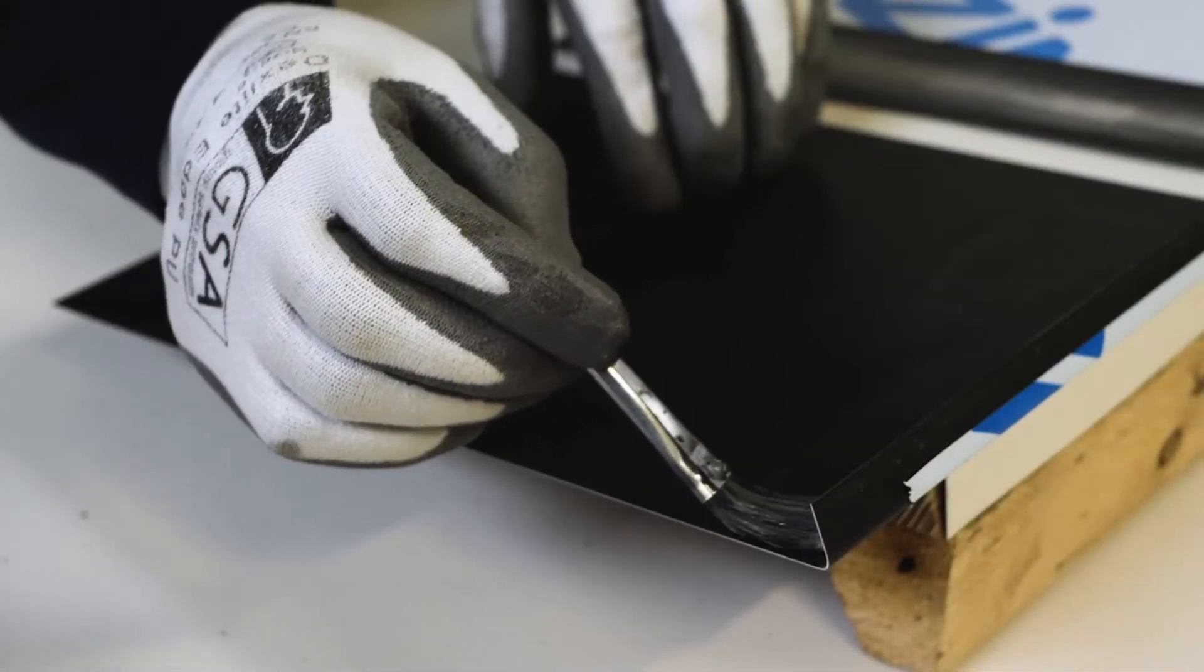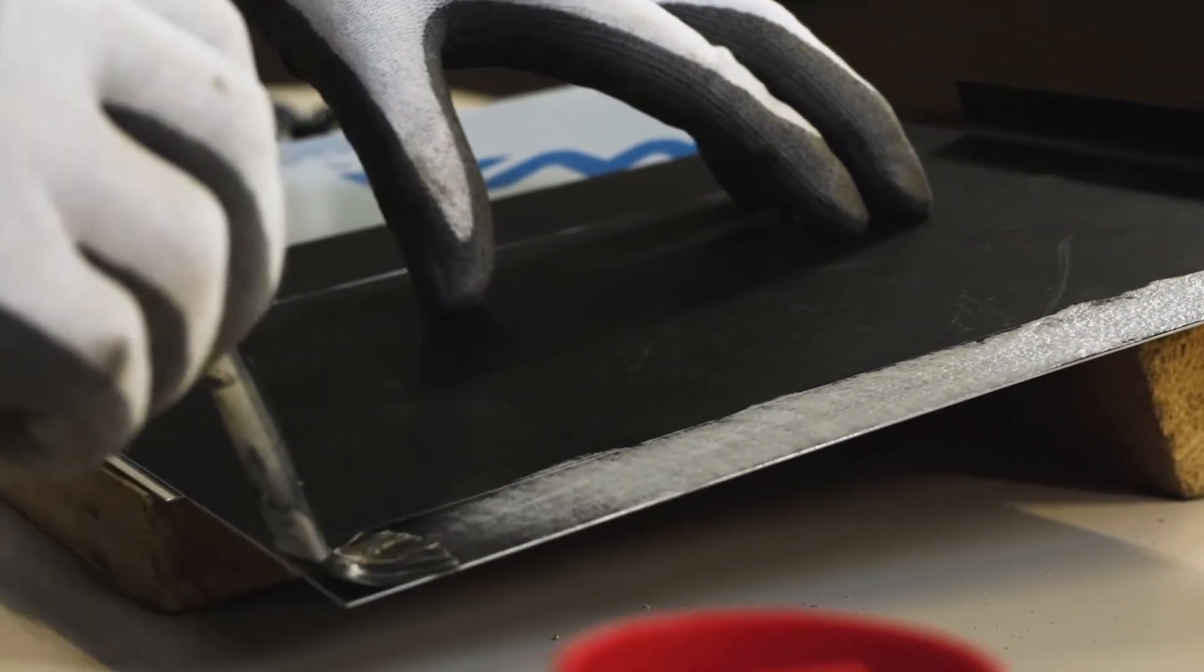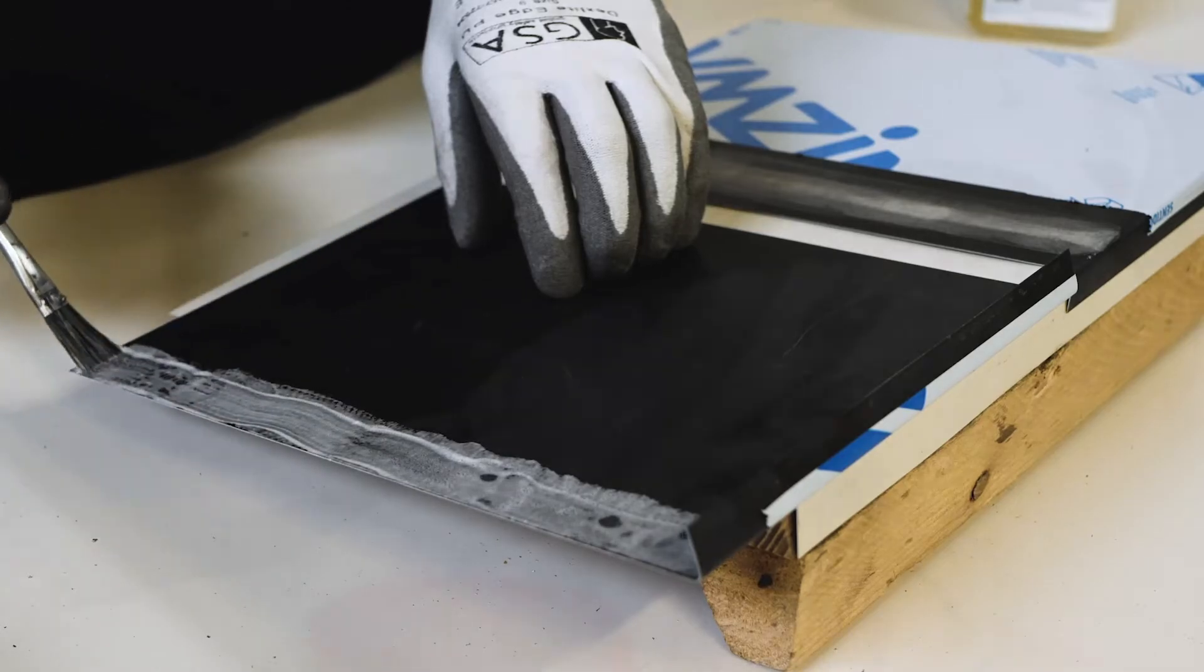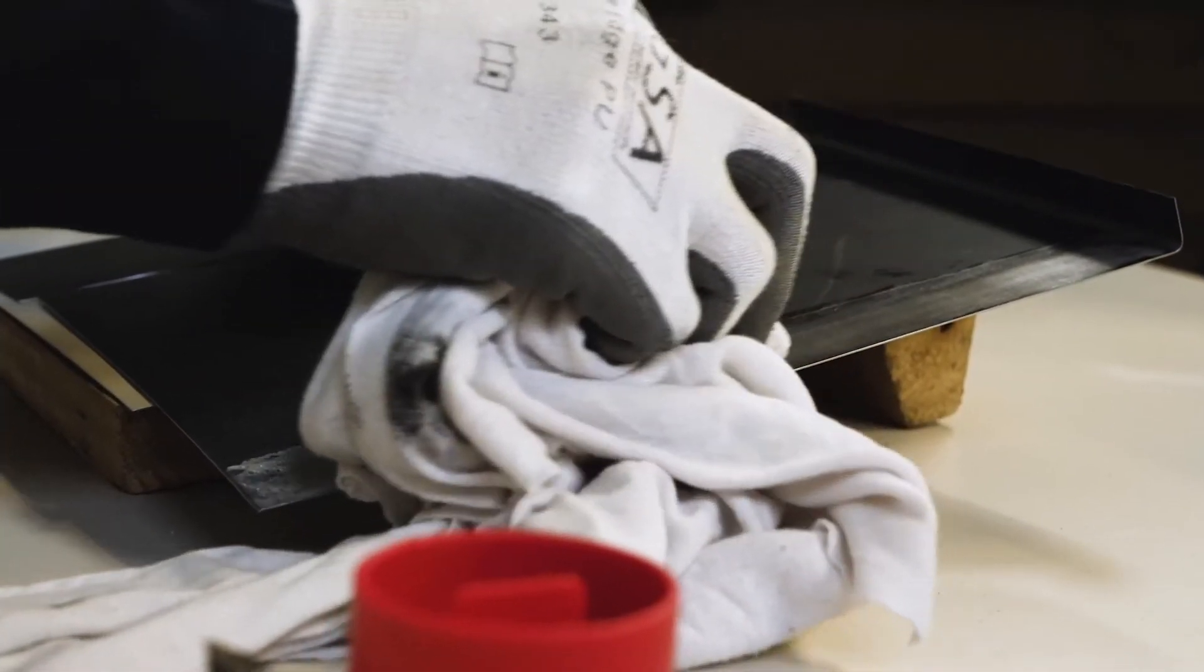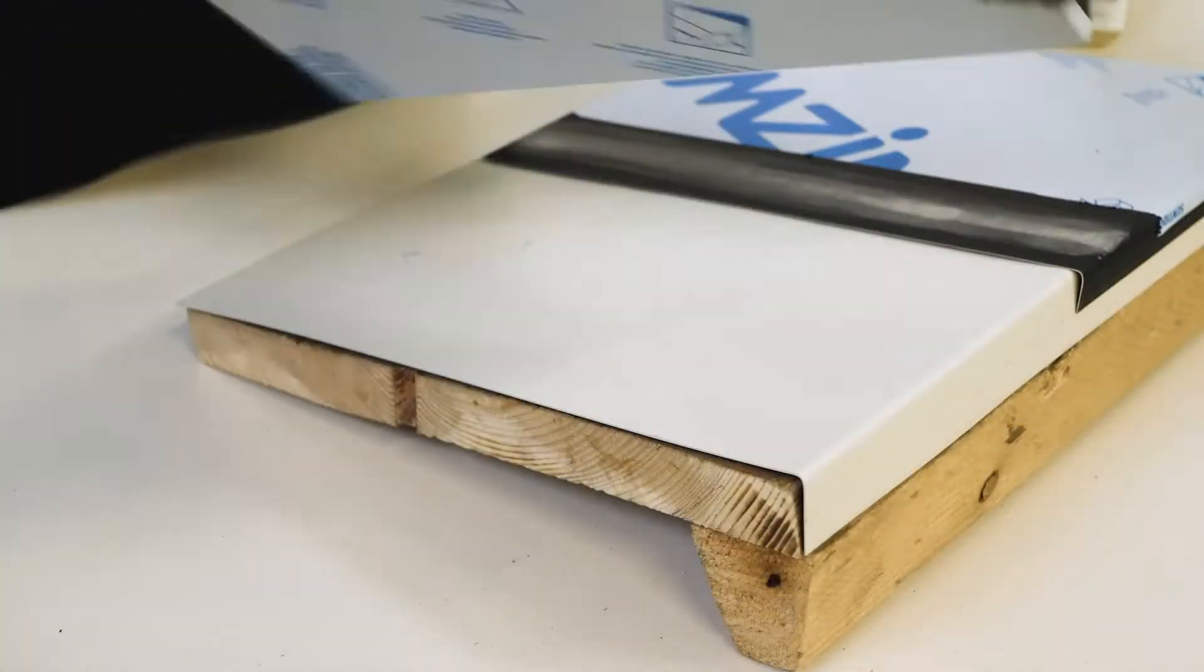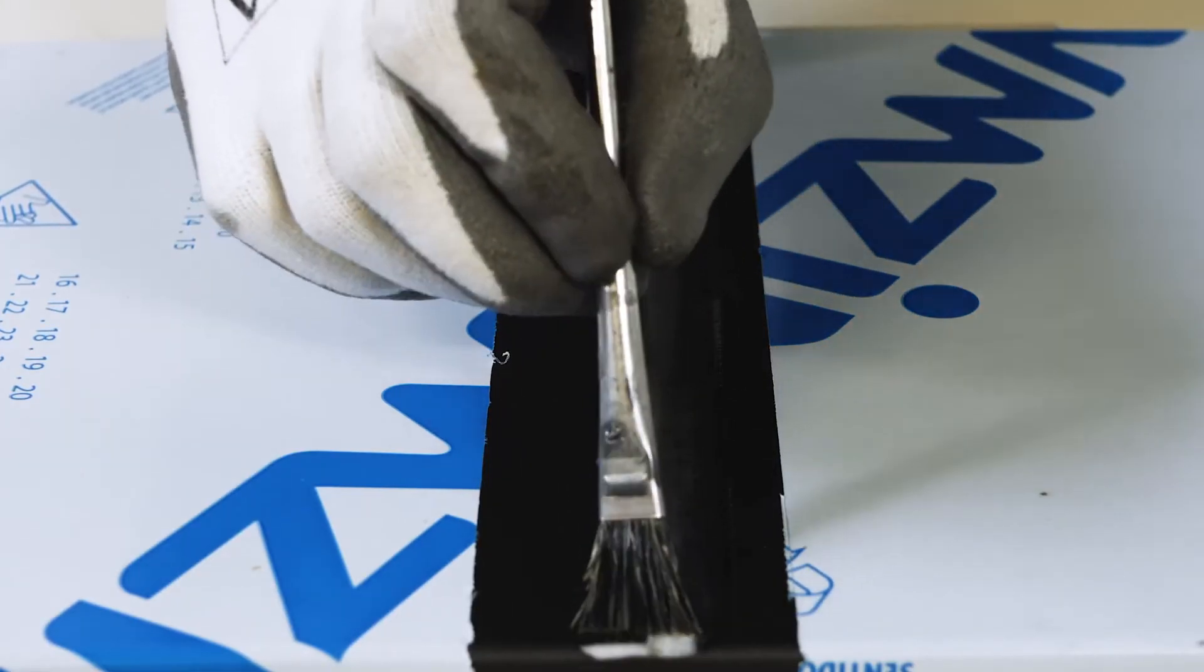The same is then done with the upper sheet. The sheets are placed over each other and the top of the upper sheet is stripped.